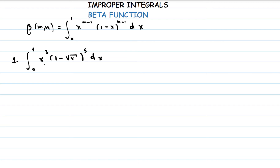The first thing to do is try to spot m and n. A very terrible mistake you could make is to say that because x cubed appears, m minus 1 equals 3, so m is 4, and because of the power 5, n is 6 — giving beta of 4 and 6. This is completely wrong. In this formula x has no power on it, but here x has a power of one half. We have to make this expression equivalent to the standard form, meaning x must be free just as it is in the definition.